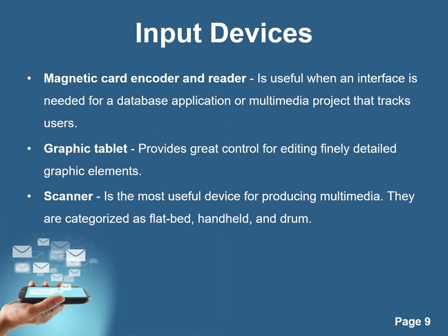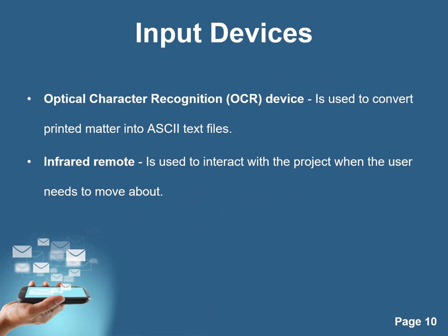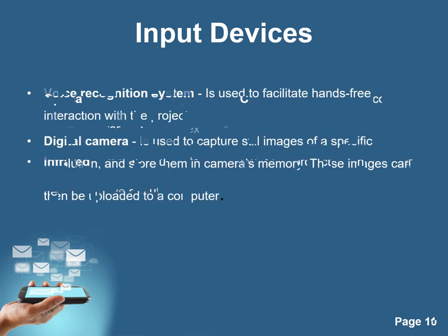Scanner is the most useful device for producing multimedia. They are categorized as flatbed and drum. Optical Character Recognition is used to convert printed matter into ASCII text files. Infrared remote is used to interact with the project when users need to move about. Voice application system is used to facilitate hands-free interaction with the project. Digital camera is used to capture still images of a specific resolution and store them in the camera's memory.